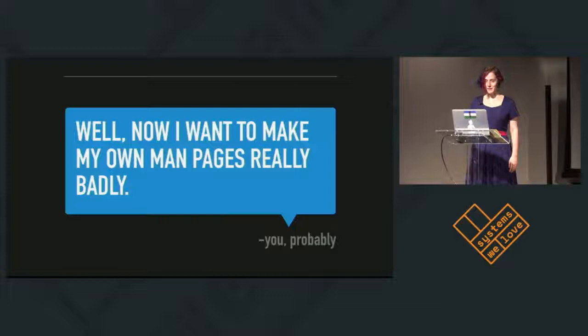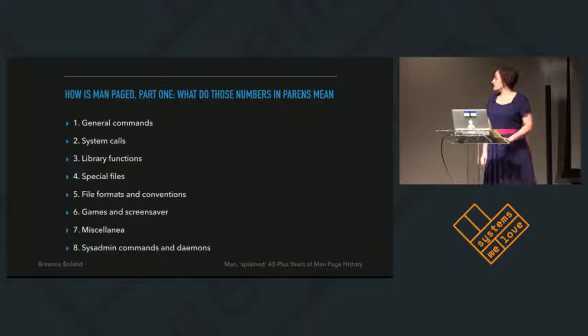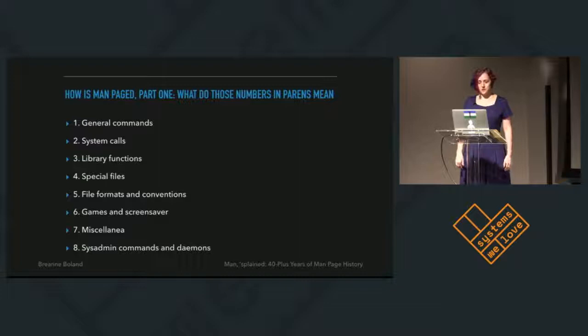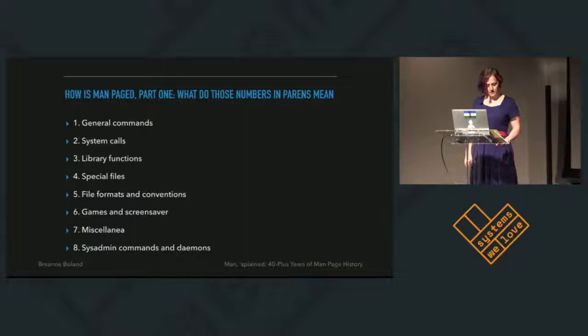There are a couple of systems of organization you need to know. The first is how ManPages are organized. Those numbers in parentheses refer to what section in the original physical manual they would have been in — and at this point, it's just to indicate the kind of utility you're dealing with. For instance, sed, make, and awk are all in section one; strace is two; exit is three; and netstat and fdisk are eight.